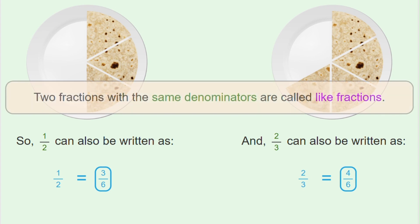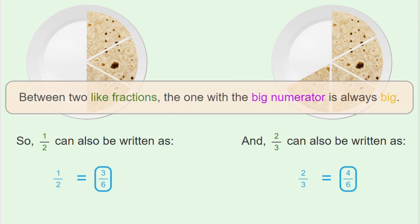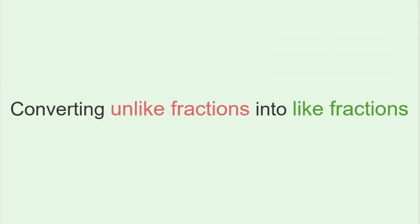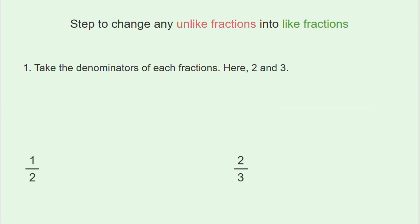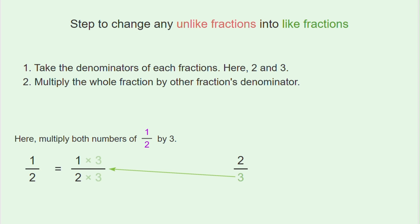Two fractions with the same denominators are called like fractions. Between two like fractions, the one with the bigger numerator is always bigger. To convert any unlike fractions into like fractions: step one, take the denominators of each fraction — here, two and three.